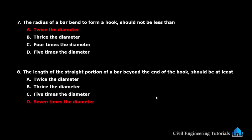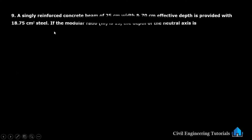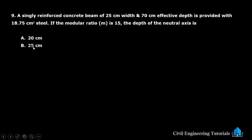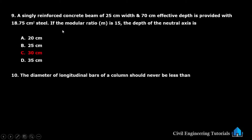Next question: a singly reinforced concrete beam of 25 cm width and 70 cm effective depth is provided with 18.75 cm² of steel. If the modular ratio M is 15, the depth of the neutral axis is — option A: 20 cm, option B: 25 cm, option C: 30 cm, option D: 35 cm. The answer is option C, 30 cm. I will show you how to calculate this in detail in my next video.